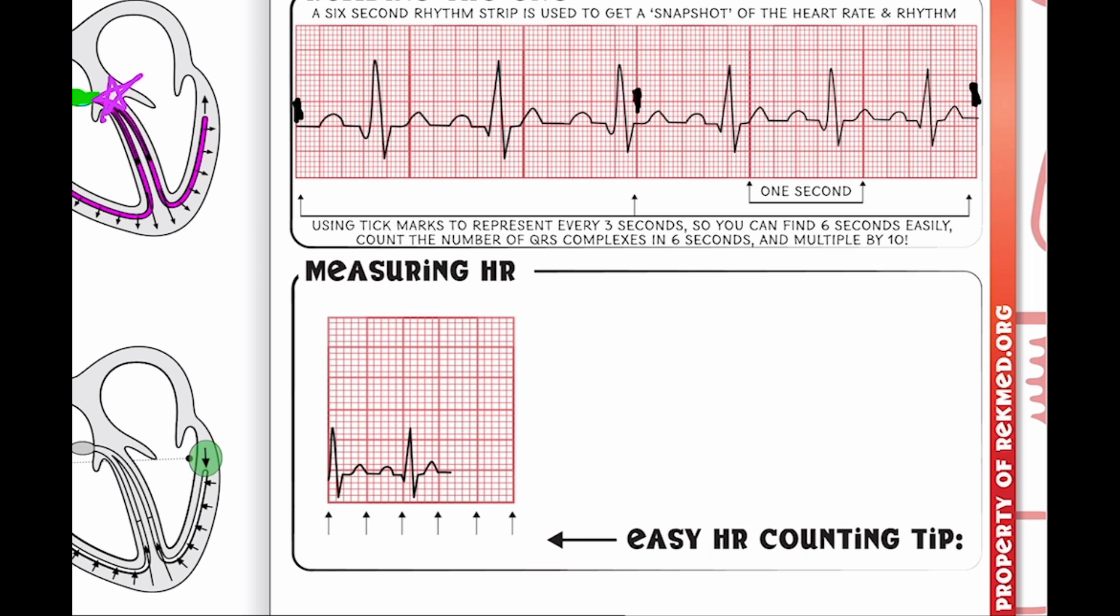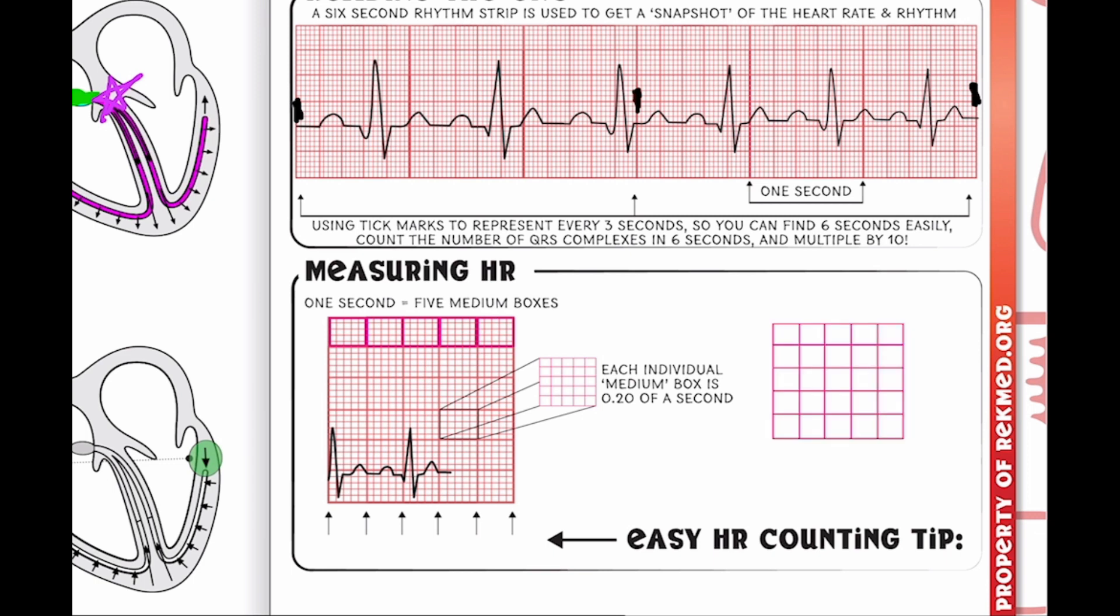So let's break this down even more. We know that five of these medium boxes represent one full second. When we zoom even further into one single medium box, this is actually going to represent 0.2 fractions of a second in time, and each small box within the medium box is going to be 0.04 fractions of a second. So we're going to put this all together and see what kind of electrical measurements we aim for in a nice normal regular heartbeat that has no problems or issues.